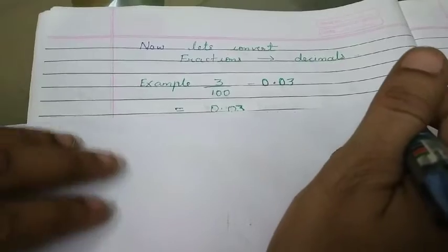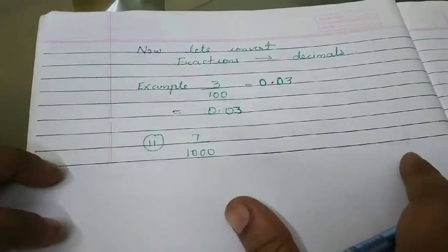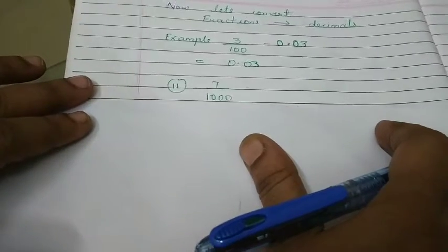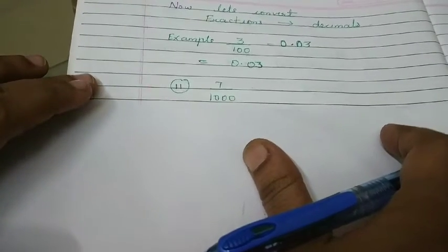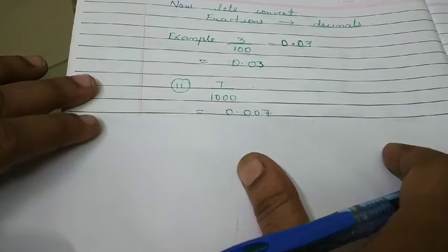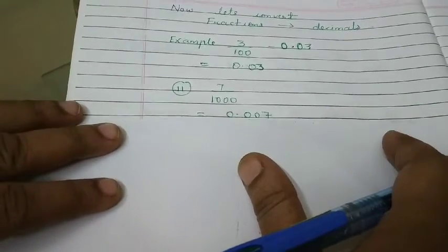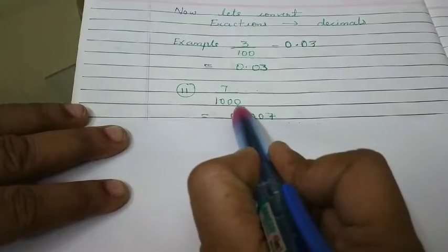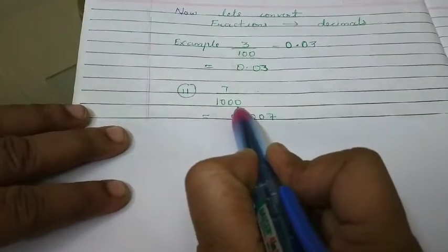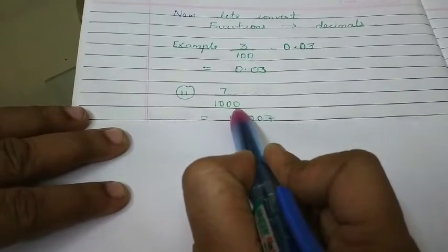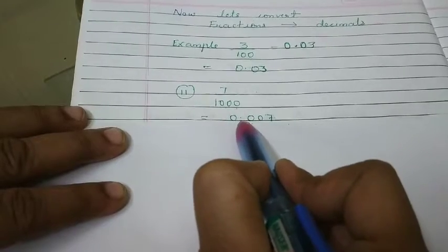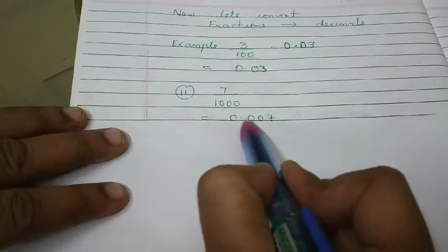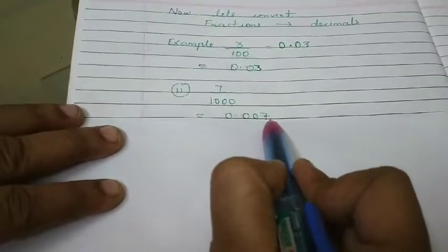Here, we have few more examples like 7 upon 1000. Can you guess what will be the answer? Yes, of course, the answer is 0.007. As you can see that in denominator, there are three zeros. So, when we are writing in the answer, after decimal, we should have three numbers. So, it becomes 0.007.